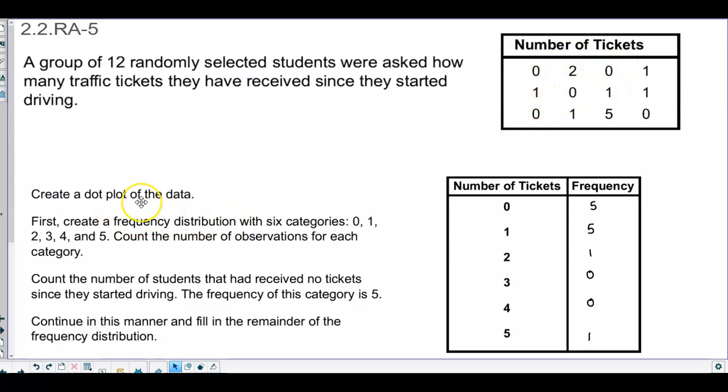So we want to create a dot plot of the data. Before we do that, we need to create a frequency distribution with six categories. So there were students that had zero number of tickets, one number of tickets, two, three, four, and five.